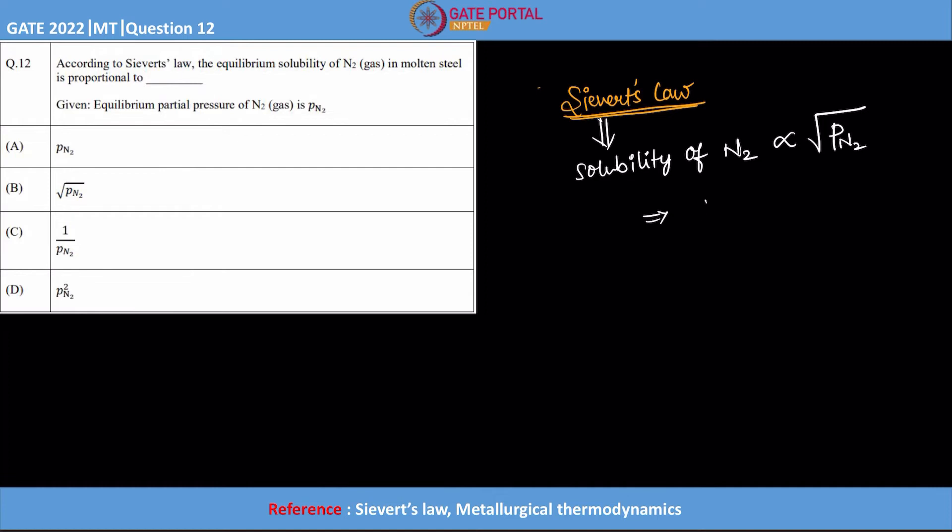In other words, we can write the weight percentage of a particular gas is equal to k constant, this is the proportionality constant, into root of partial pressure of nitrogen. So this is Sievert's law.